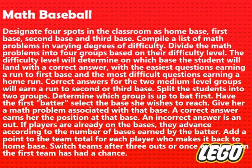Correct answers for the two medium level groups will earn a run to second or third base. Split the students into two groups and determine which group is up to bat first. Have the first batter select the base she wishes to reach and give her a math problem associated with that base. A correct answer earns her the position at that base; an incorrect answer is an out. If players are already on the bases, they advance according to the number of bases earned by the batter. Add a point to the team total for each player who makes it back to home base. Switch teams after three outs or once everyone on the first team has had a chance.